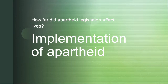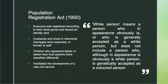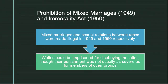Implementation of Apartheid. How far did apartheid legislation affect lives? The Population Registration Act required everyone to be registered according to their racial group and issued an identity card. Husbands and wives in interracial marriages were forced to split. Children who appeared lighter or darker than their parents were classified differently. It facilitated the development of a vast civil service. Mixed marriages and sexual relations between races were made illegal in 1949 and 1950 respectively. Whites could be imprisoned for disobeying the Immorality Act, though their punishment was not usually as severe as for members of other groups.